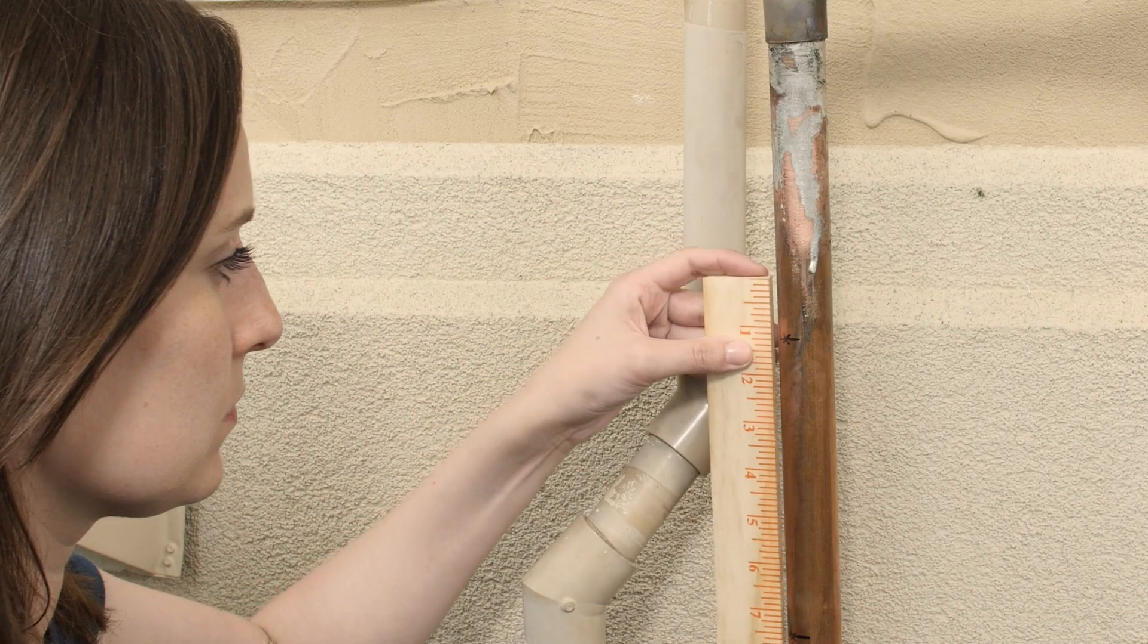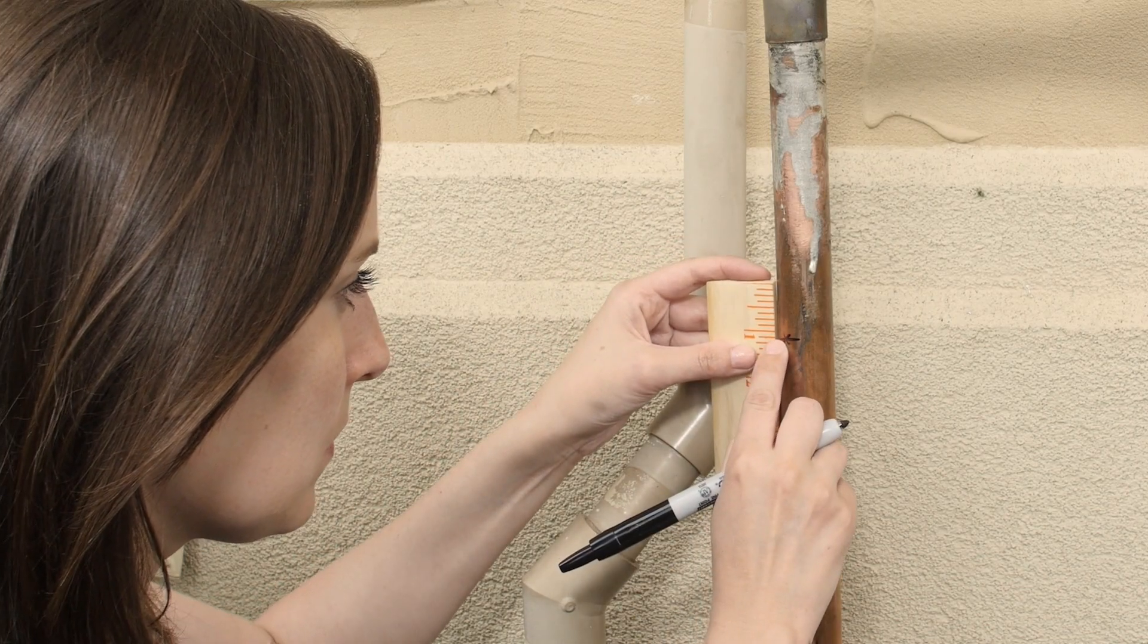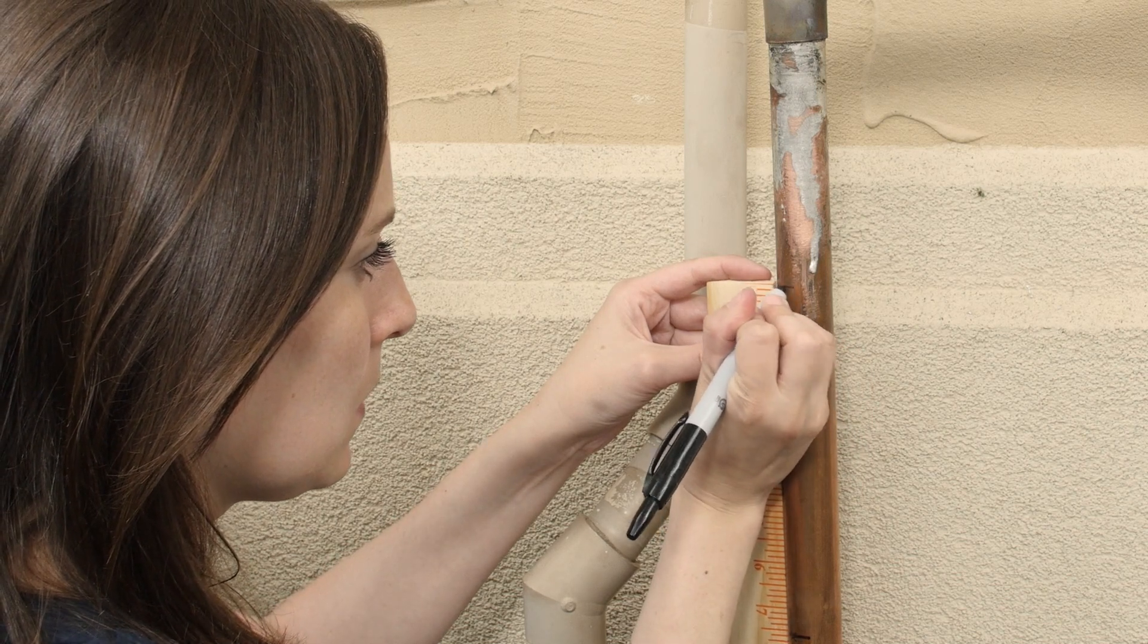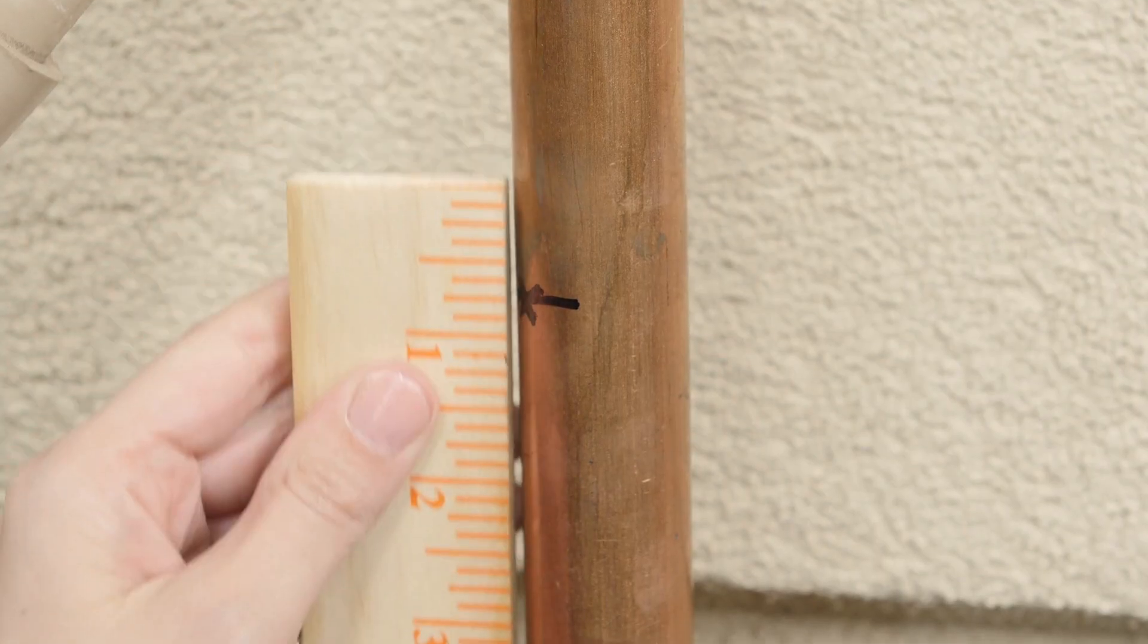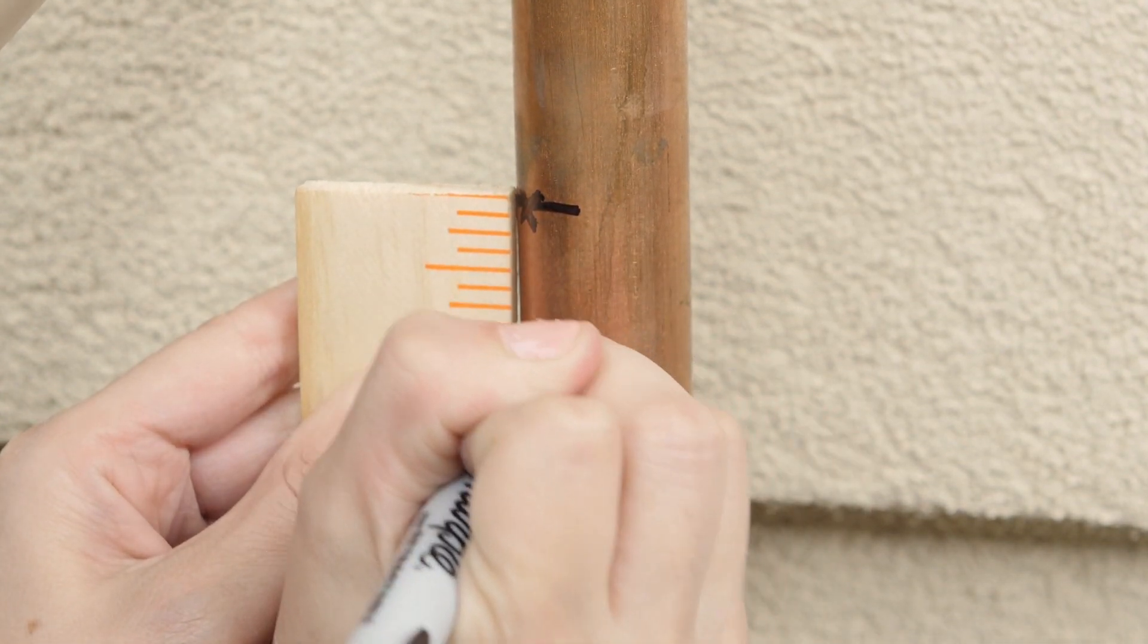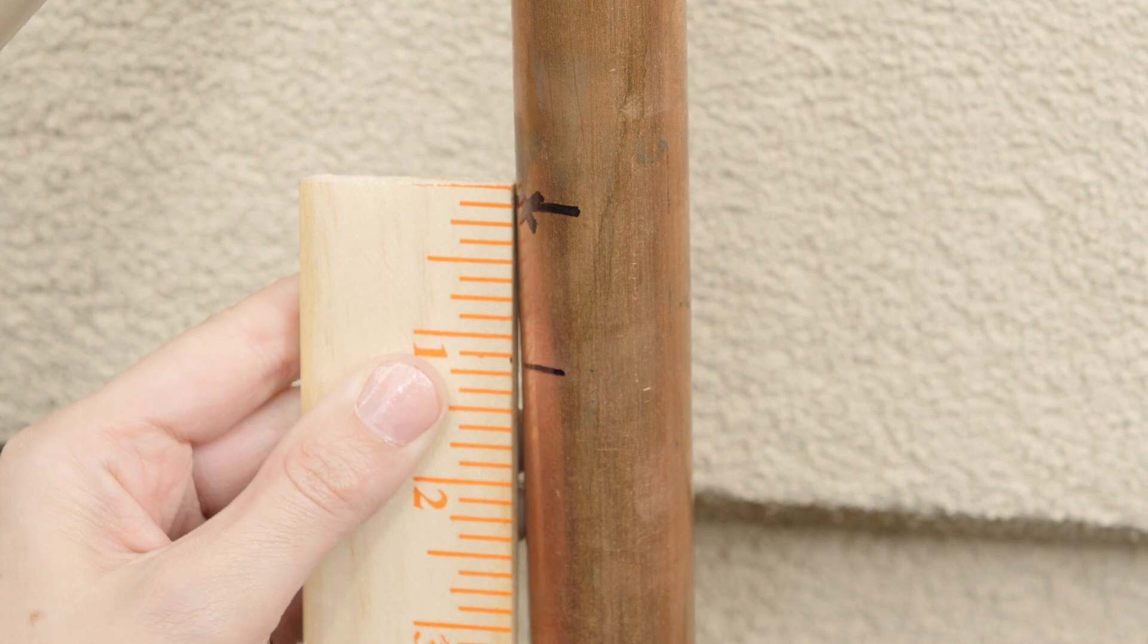The fittings will need some room to grip the pipe. Measure up from the top cut mark as indicated in the directions. Make a new mark for the overlap. Now measure down from the bottom cut mark and draw another line. These marks will help you know how far to push the fitting onto the pipe.